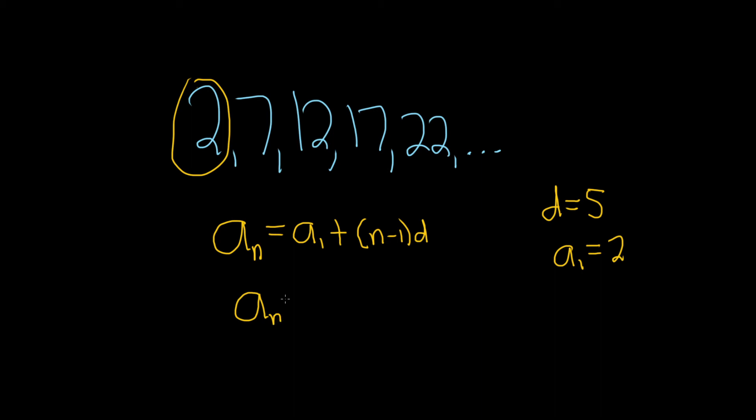a_n is equal to a_1, which is 2, plus parentheses n minus 1, and then d is equal to 5.